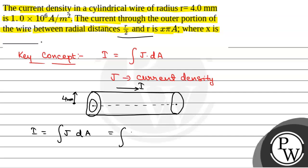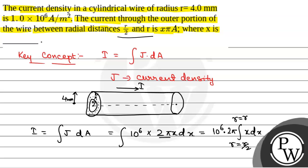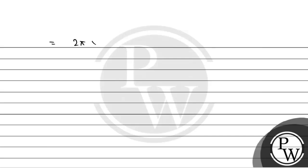So dA = 2πx dx, and j is 10⁶. Therefore the current integral becomes 10⁶ × 2π × ∫x dx, taking the constants out of integration, integrated from x = r/2 to x = r. The integration of x dx is x²/2, so that gives x²/2 evaluated from r/2 to r.